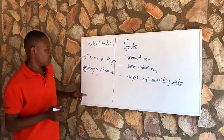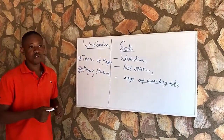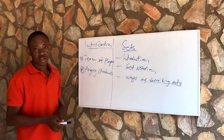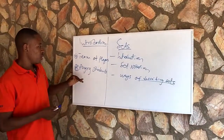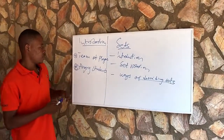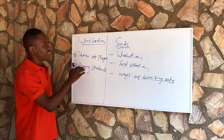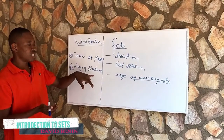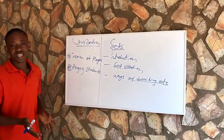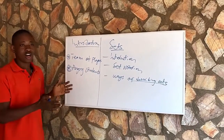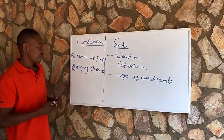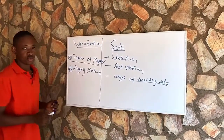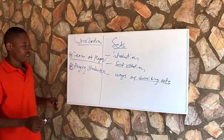Looking at example B, angry students: Kofi might see Amma to be angry, but Kwame will see Amma not to be angry. So with these two examples, we can see that a team of players clearly defines a collection of players playing a specific team. But with angry students, we can't really tell which group of students fall under angry students. So example A qualifies to be a set, but example B does not qualify to be a set.